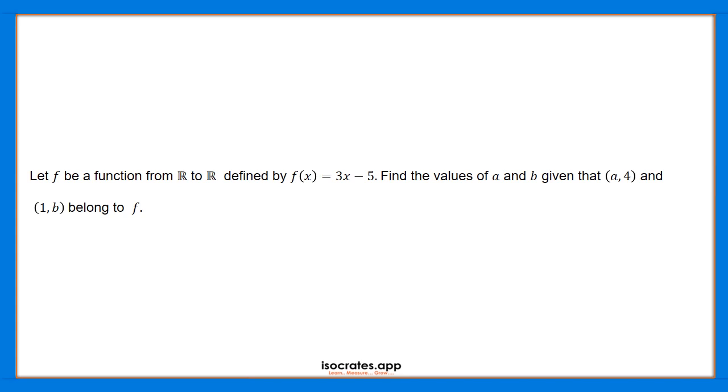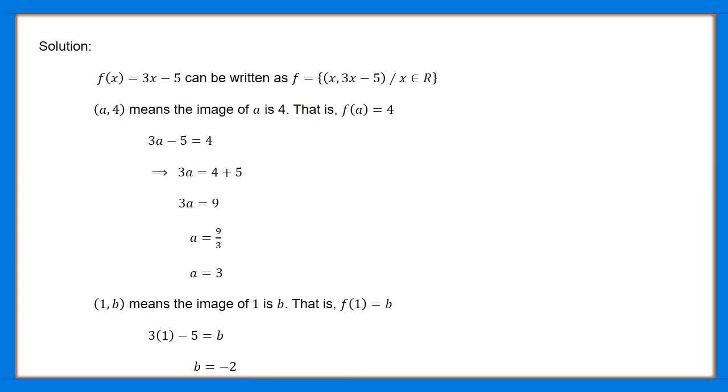equals 3x minus 5, and we will find a and b. The function f(x) equals 3x minus 5 can be written as f equals the set of pairs (x, f(x)) such that x belongs to R. First,